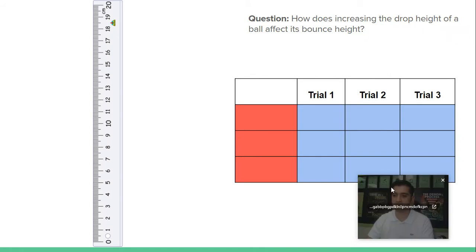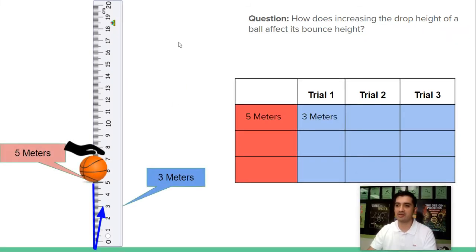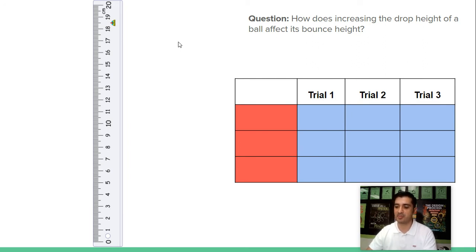Let's take a look at this question. We have how does increasing the drop height of a ball affect its bounce height? So we're going to try to figure out what is our independent variable and what's our dependent variable. Again, what is it that the scientist is changing and what is being measured?